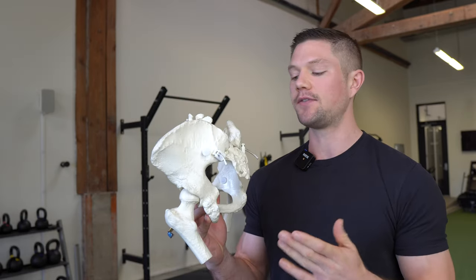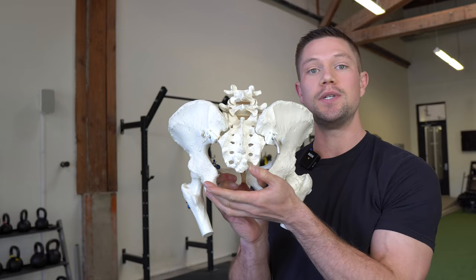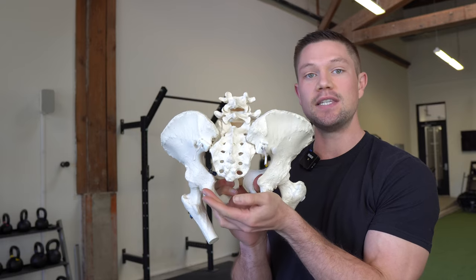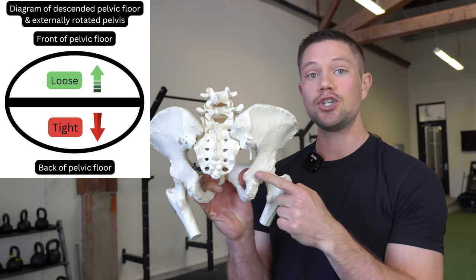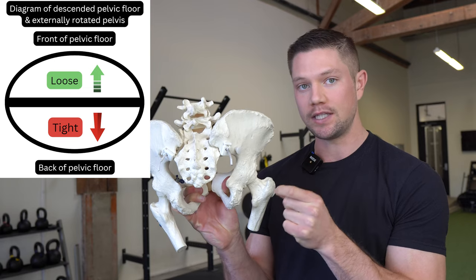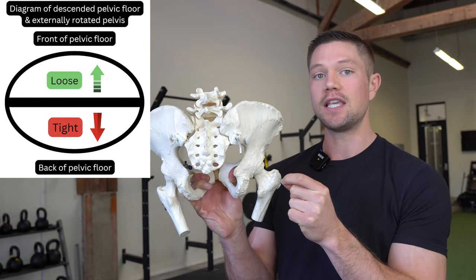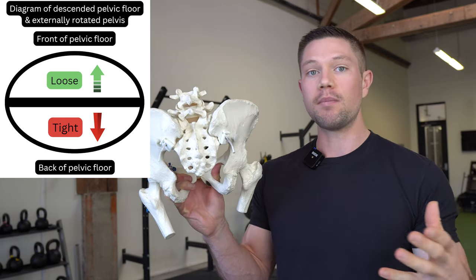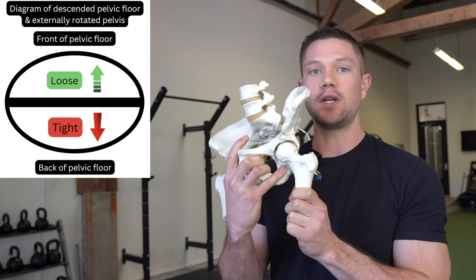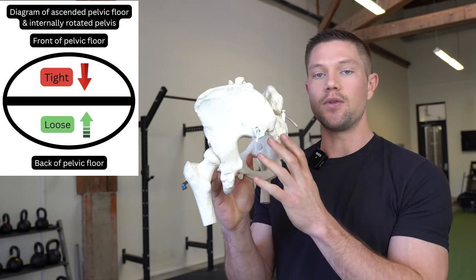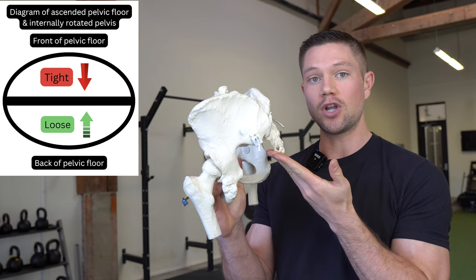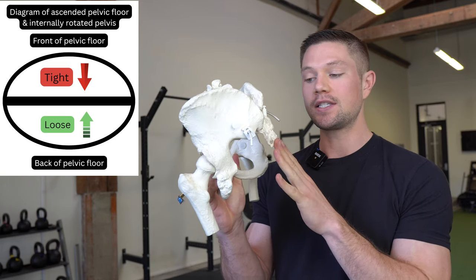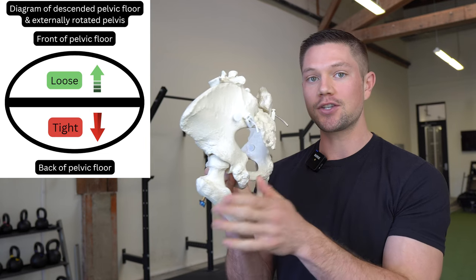When someone experiences pelvic floor issues, in many cases they experience tightness. That tightness is often the result of a pelvic floor that's actually too descended — dropped in the back — so tissues on the back half of the pelvis are in a shortened position. This puts the pelvis in an externally rotated environment. When my pelvis externally rotates, it does this; when it internally rotates, it does that. Stuff on the back half shortens in external rotation and stretches in internal rotation, and that feeds down into our femurs too.